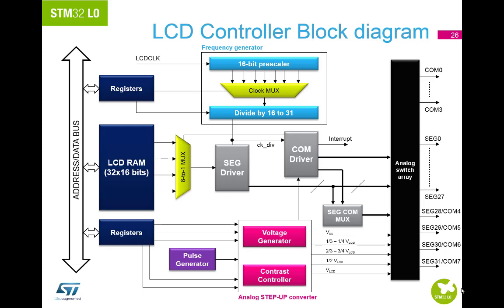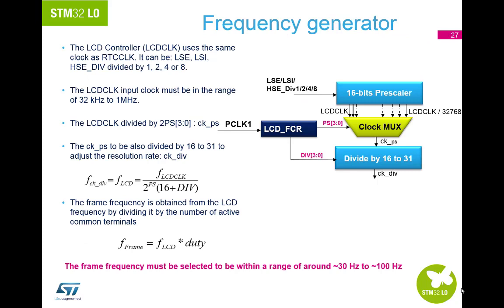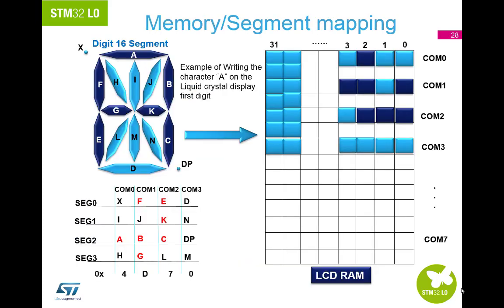Used LCD segments and common pins should be configured as GPIO alternate functions, and unused segments and common pins can be used for general purpose IO or any other peripheral or alternate function. The frequency generator consists of a 16-bit ripple counter with a pre-scaler and a programmable clock divide factor of 16 to 31. The frame frequency is used to communicate with LCD devices, and the user configures this frequency to be within the operation frequency range of the LCD.